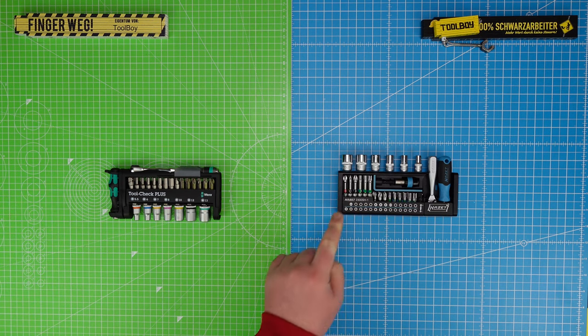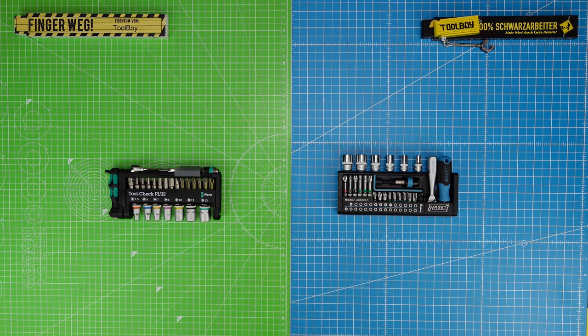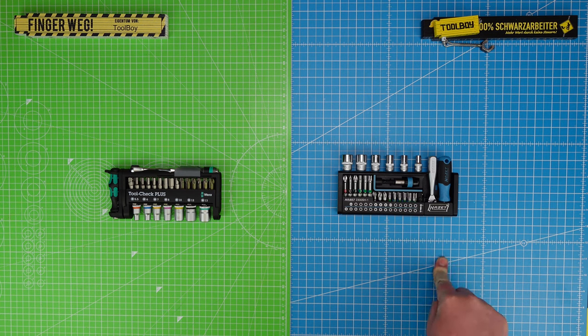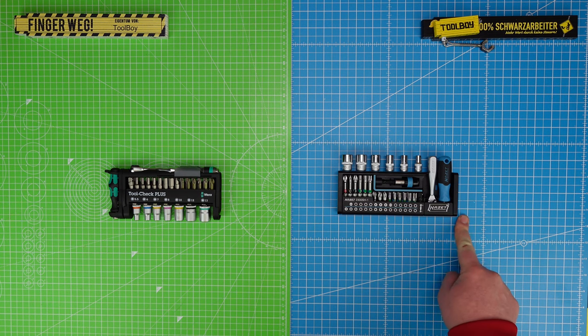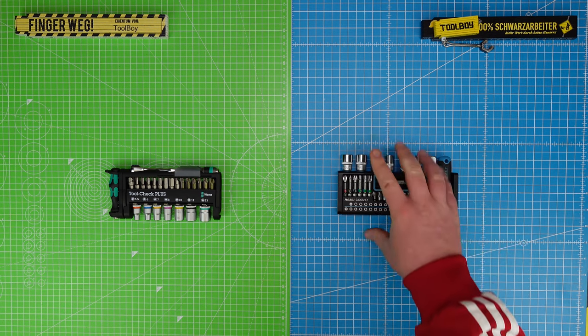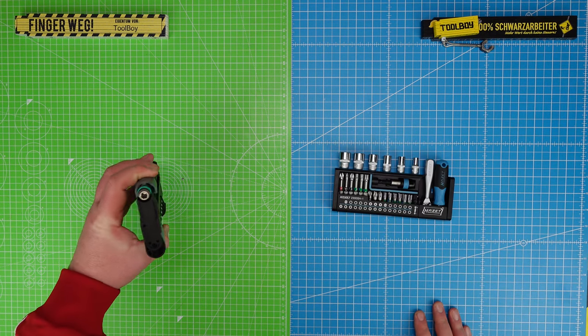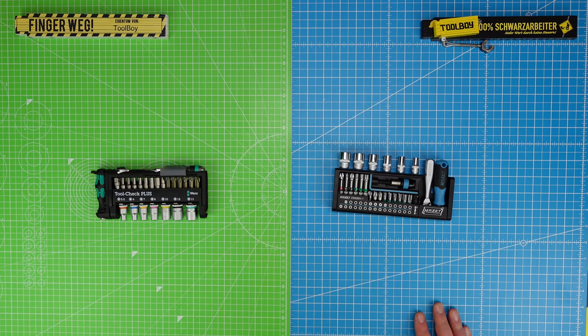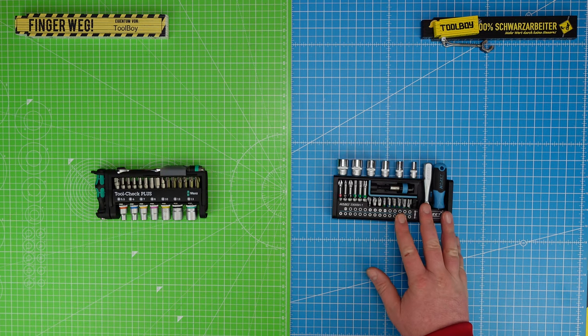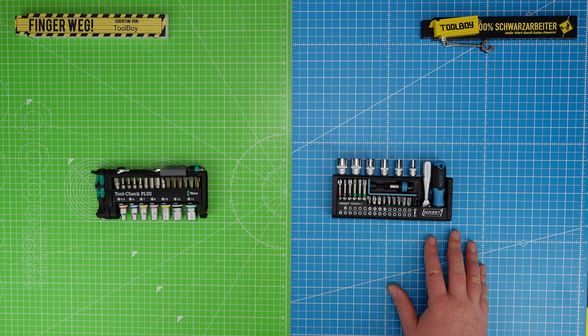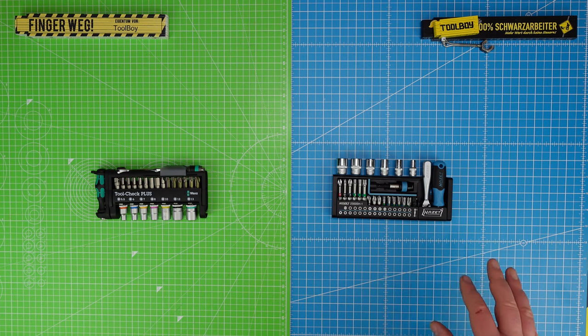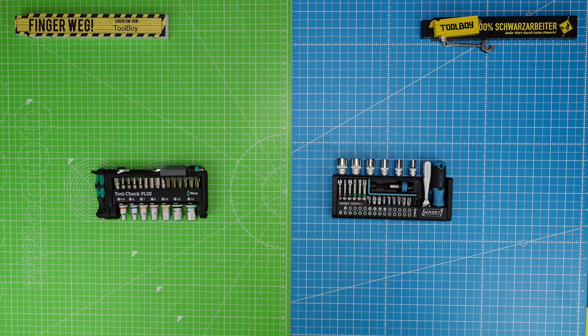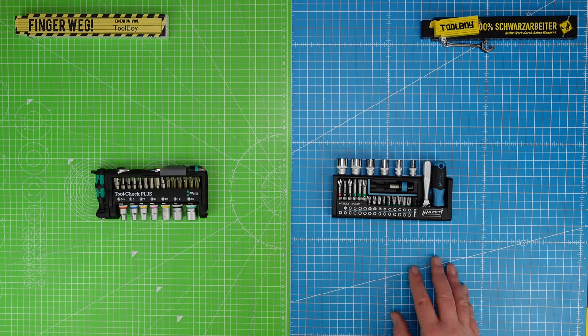The Smart Holder from HZ, the 2300 SH-1, weighs around 1000 grams, also has 39 parts, is slightly longer with a rectangular format. Retail price of 113 euros, currently available in the market for around 80 euros, so this one is more expensive.